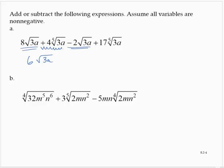4 times the fifth root of 3a and 17 times the fifth root of 3a — again, those are like radical terms. So plus 21 times the fifth root of 3a.